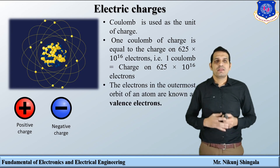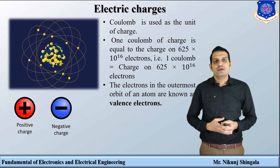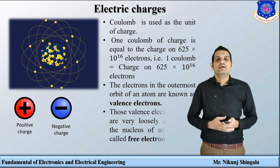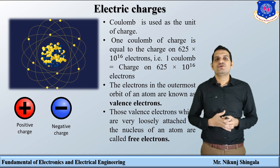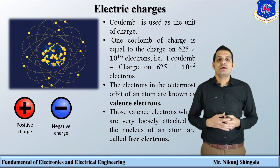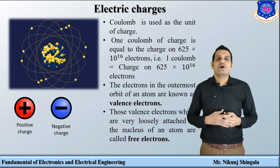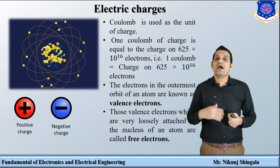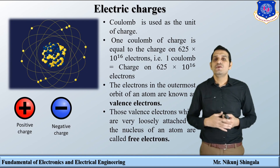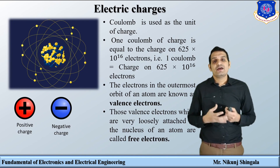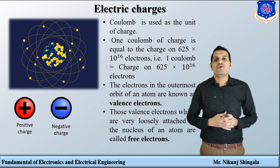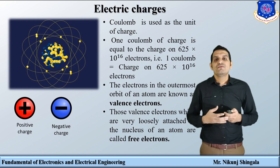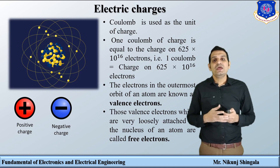There are two types of electrons: valence electrons and free electrons. The electrons which are in the outermost orbit of the atom are known as valence electrons. Those electrons which are loosely attached to the nucleus of the atom are the free electrons. An atom has a number of orbits depending on its atomic number. Electrons revolving in the outer orbits are loosely bound to the nucleus, while electrons in the innermost orbit are tightly bound. The electron in the outermost orbit can be easily removed and becomes a free electron, and free electrons are responsible for current conduction.